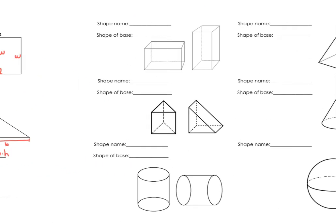Now looking at three-dimensional shapes, since that's what this unit is about. The first shape is a rectangular prism — it looks like a box. It's important to know the shape of the base because that helps us find the volume. The base of a rectangular prism is a rectangle. The three dimensions we worry about are length and width for the base, and then height, which is how high the rectangular prism goes.